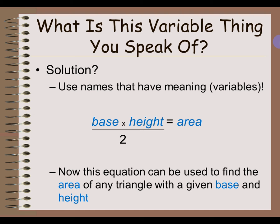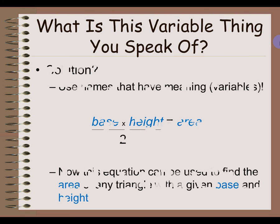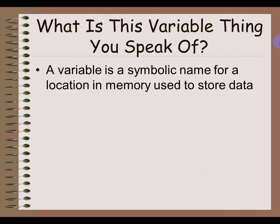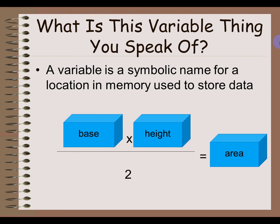That's essentially what a variable is. In the world of computers, we can expand this a little further to say that a variable is a symbolic name for a location in memory used to store data. So I'm naming a spot in my computer where I'm going to have a piece of data I can access. We have three variables which represent three distinct locations in my computer's memory, each one with a name so I can access the data stored there at a later time.